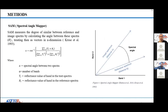The spectral angle mapper measures the degree of similarity between reference and image spectra by treating the spectral angle as a vector in n-dimensional space. Small angles indicate high similarity, and the spectral angle mapping is calculated using the corresponding equation.